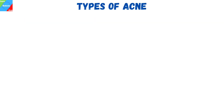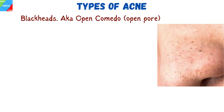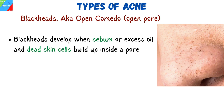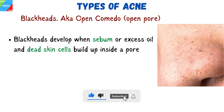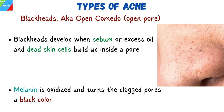These pimples can take several forms. The first are blackheads, also known as open comedo, which means open pore. Blackheads develop when sebum or excess oil and dead skin cells build up inside a pore. As the buildup accumulates, it widens the opening of the pore and you see a blackhead. The black speck is often thought to be dirt by many individuals. Actually, what you are seeing is a chemical reaction with the sebum that occurs under your skin.